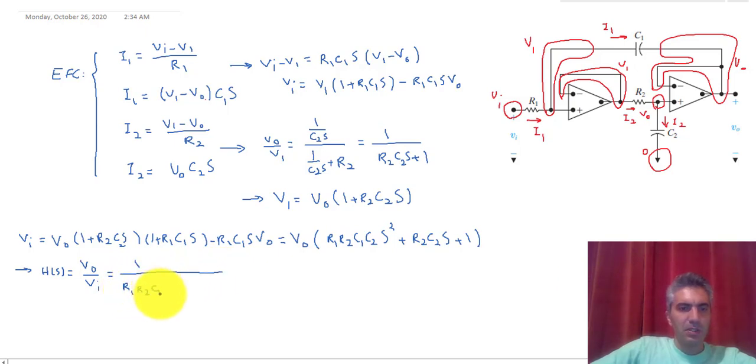So now H(jω) would be equal to 1 over 1 minus R1R2C1C2 ω to the power of 2 plus R2C2ω j.